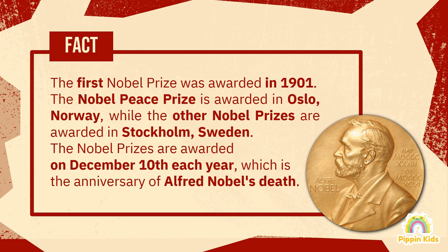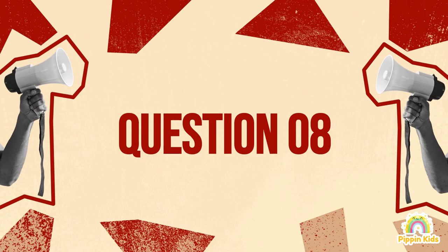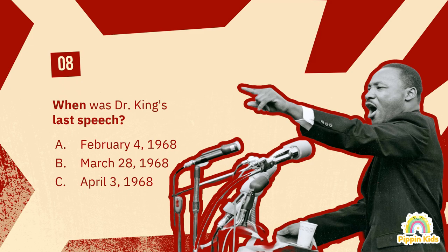Here are some cool Nobel Prize facts: the first Nobel Prize was awarded in 1901. The Nobel Peace Prize is awarded in Oslo, Norway, while the other Nobel Prizes are awarded in Stockholm, Sweden. The Nobel Prizes are awarded on December 10th each year, which is the anniversary of Alfred Nobel's death.